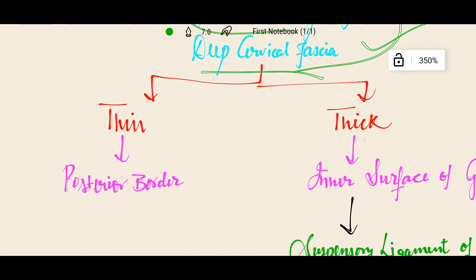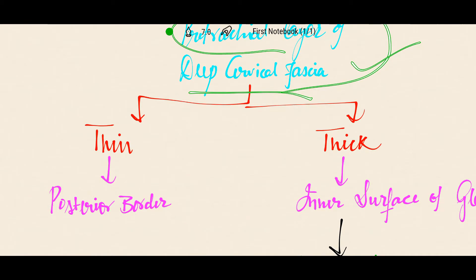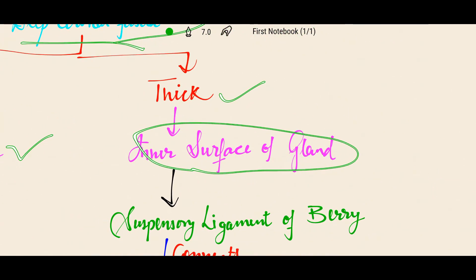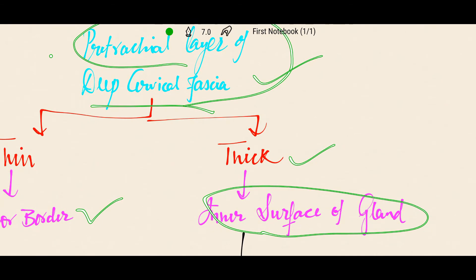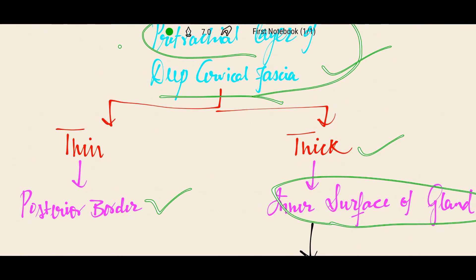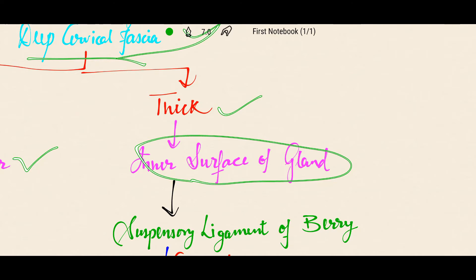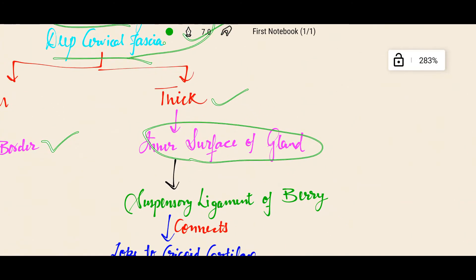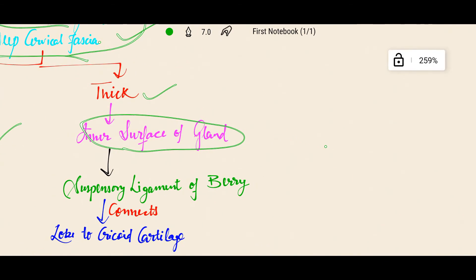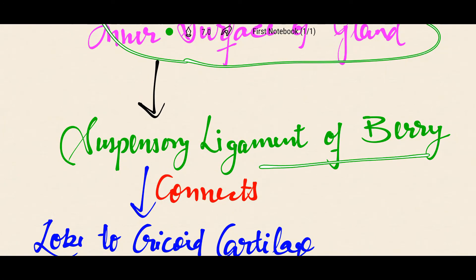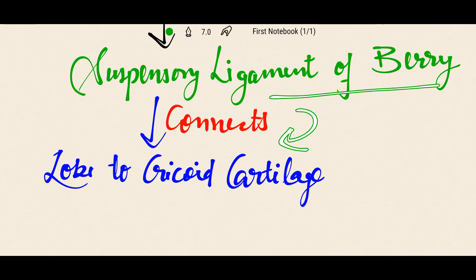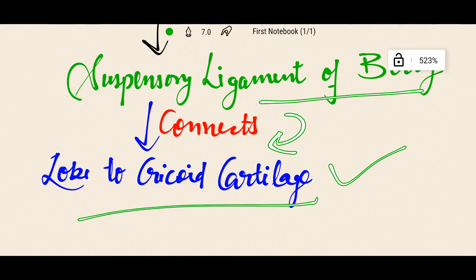The false capsule is thin along the posterior border of the lobe and thick on the inner surface of the gland. Due to the thickening of the deep cervical fascia — the false capsule — it forms the suspensory ligament of Berry on the inner surface, which connects the lobe of the thyroid gland to the cricoid cartilage.